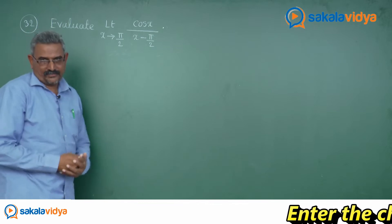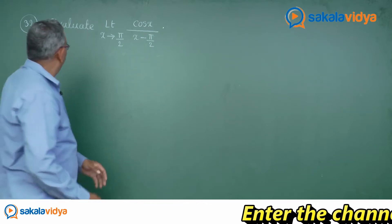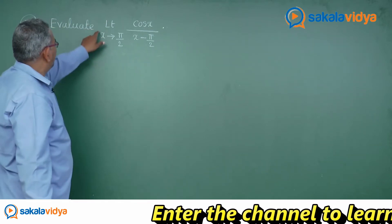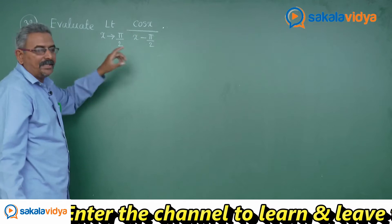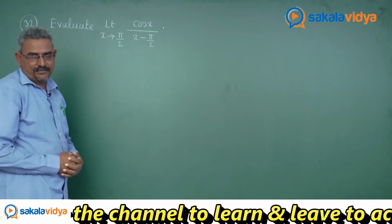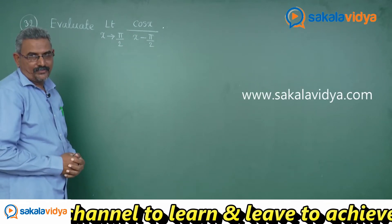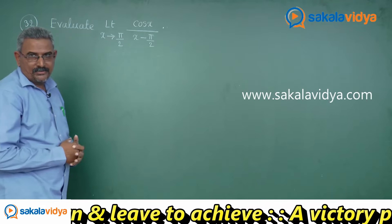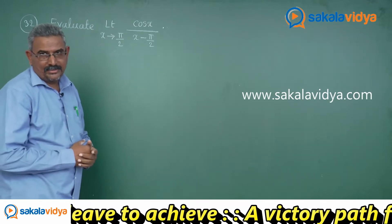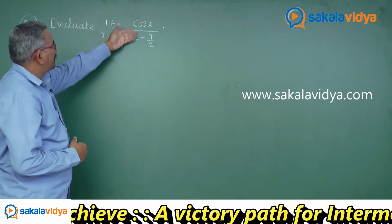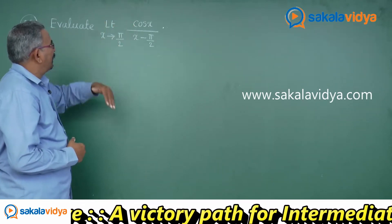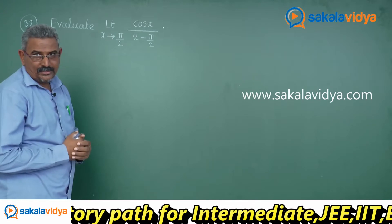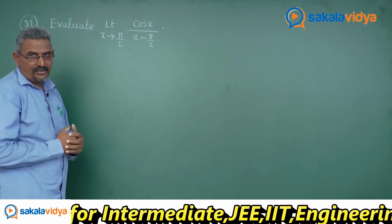Let me read the question first. Evaluate: limit x tends to π/2, cos x divided by (x minus π/2). Here, let us assume x minus π/2 is equal to y, so that cos of x becomes cos(π/2 plus y), that is cos(90 + θ).